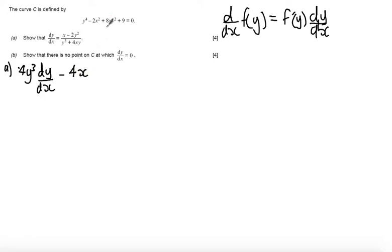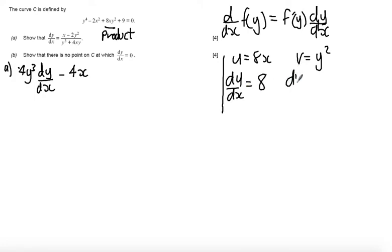Differentiating 8xy squared, this requires a product rule because this is a product of two functions. Just off to the side, as an aside, if I state that u equals 8x, that v equals y squared, I'm going to differentiate du by dx equals 8. dv by dx, differentiate y squared, I get 2y, and remember to multiply it by dy by dx again.